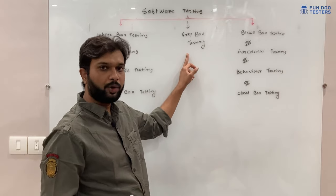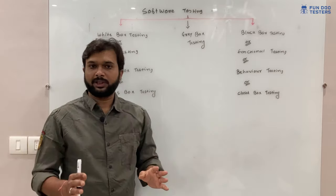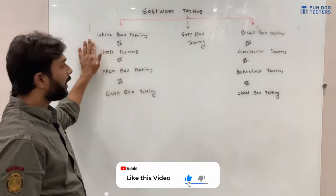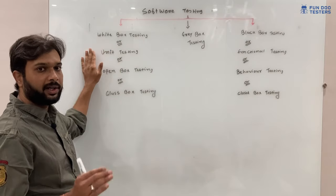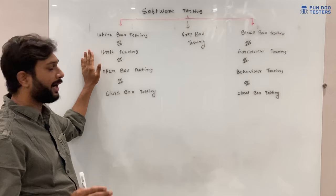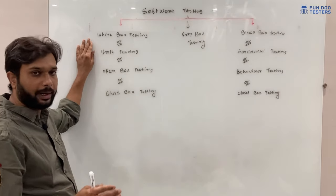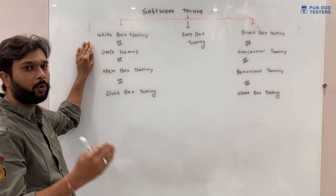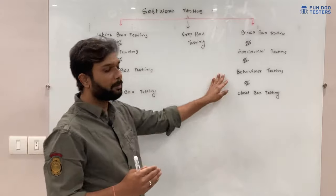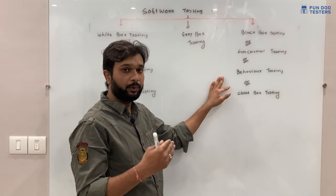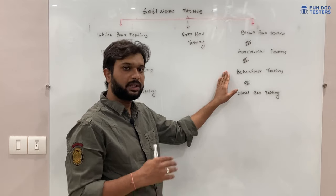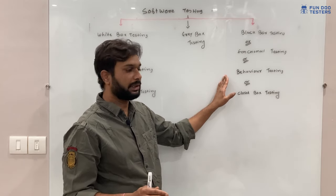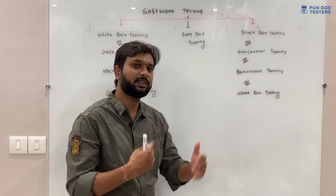Why have we differentiated into three categories? White box testing is done by developers — the name 'white box' comes from the fact that testing is done on the code itself, so testers need coding access. In black box testing we test the functionality, so no coding access is needed. Without looking at the code we can perform black box testing, and black box testing is a functional testing.